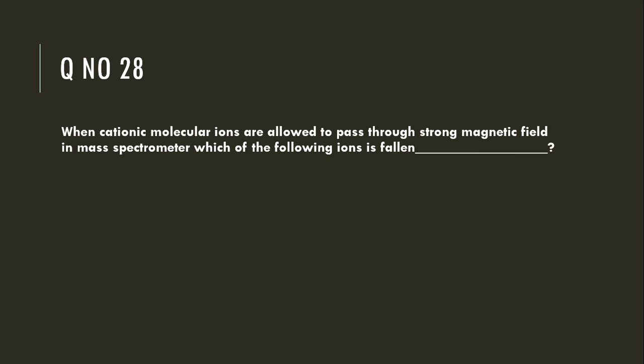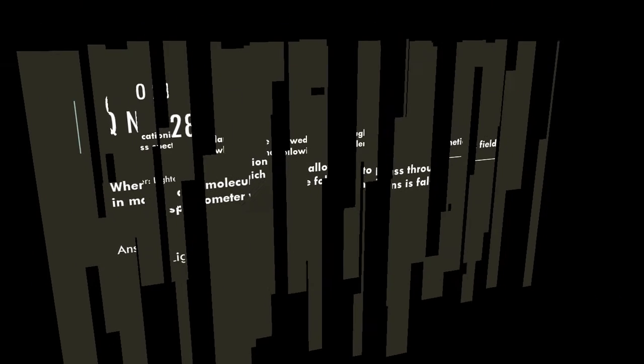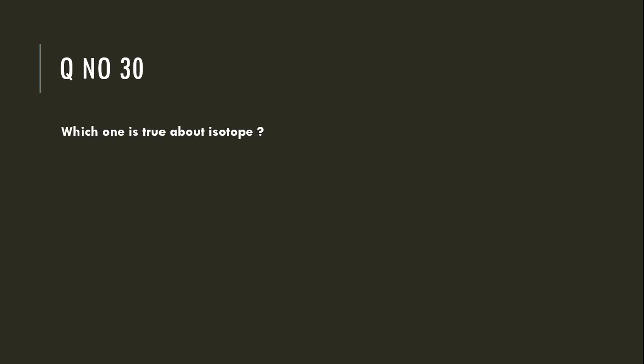Which of the following ions falls lighter in the mass spectrometer? The properties of an element mostly correspond to the isotope which has greater relative abundance.